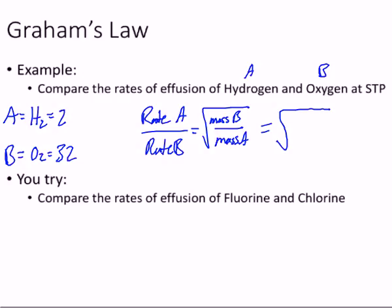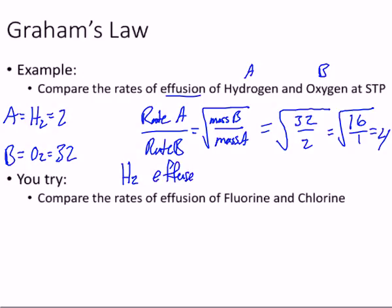So you've got to remember that when we're dealing with mass, which we are here. So mass B is 32 over 2. So that's going to be the square root of, we simplify that, 16 over 1, which is just the square root of 16, which equals 4. So the answer, you've got to take it one step further. You can't just put 4 down. What we would say is that hydrogen effuses four times faster than oxygen.